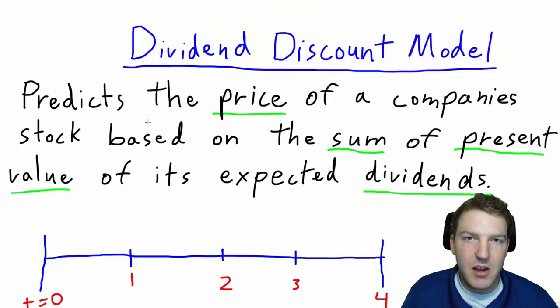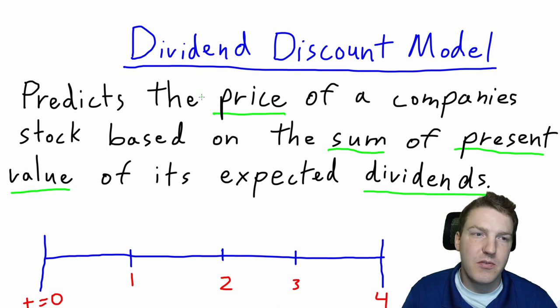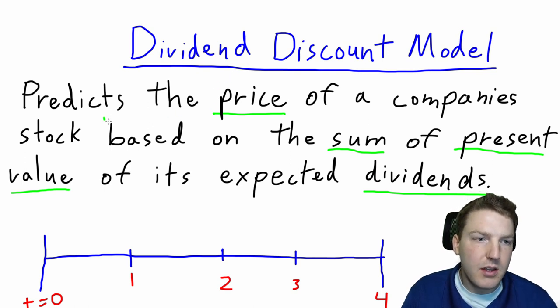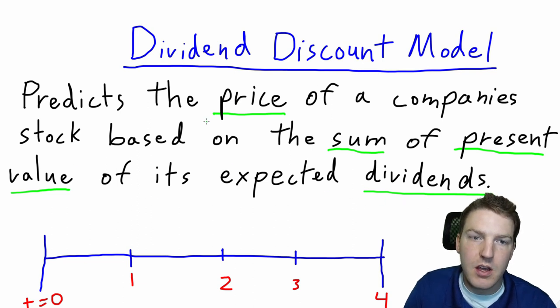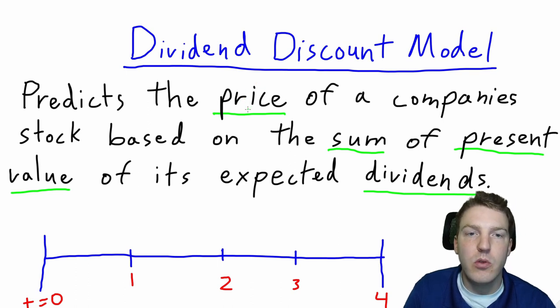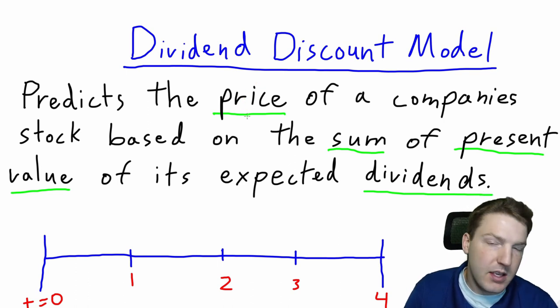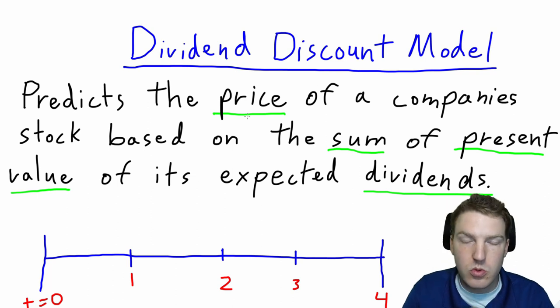In this video I'm going to teach you the dividend discount model. The dividend discount model is actually a really easy concept to understand if we break it down simply. The dividend discount model predicts the price of a company's stock based on the sum of the present value of its expected dividends. When we're talking about the price of the stock, we're trying to determine its value and see how that value is above, below, or equal to the price of the stock in the marketplace.